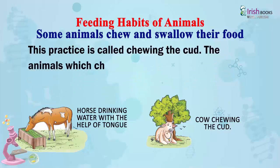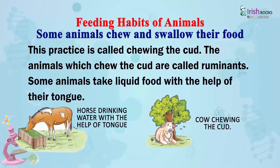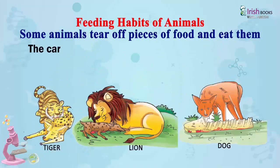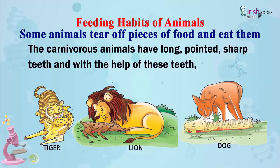The animals which chew the cud are called ruminants. Some animals take liquid food with the help of their tongue. Some animals tear off pieces of food and eat them. Carnivorous animals have long, pointed, sharp teeth. With the help of these teeth, they tear their prey into pieces.